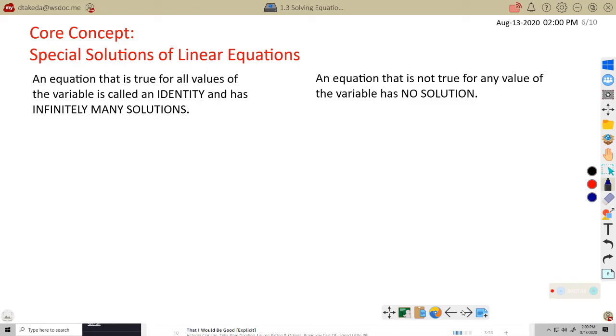A new core concept. We call these special solutions of linear equations. Because sometimes we won't have a solution when we're dealing with variables on both sides. And why is that? Well, let's take a look at what we see here. An equation that is true for all values of the variable is called an identity and has infinitely many solutions. So I'm going to give you a simple example here. Let's say I said x plus 7 equals x plus 7.